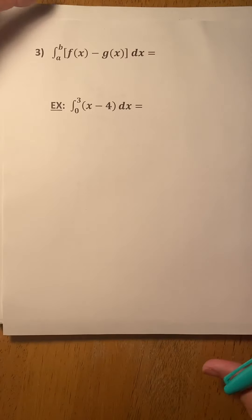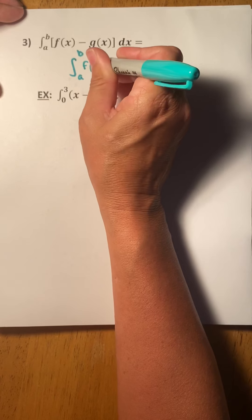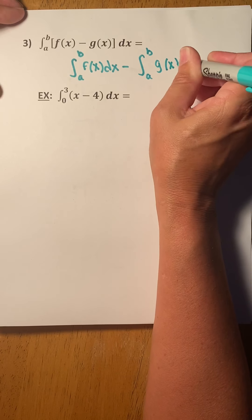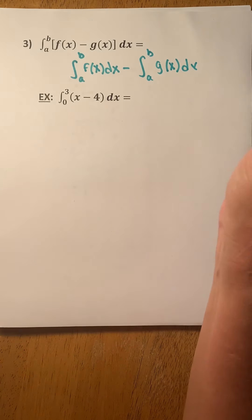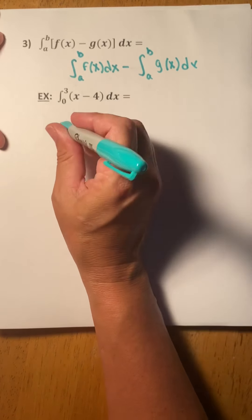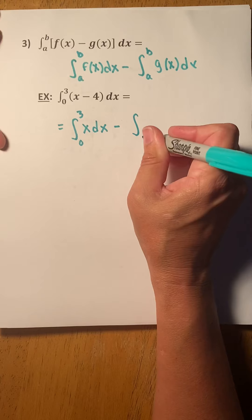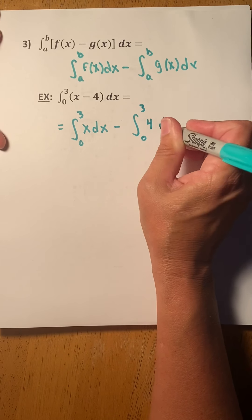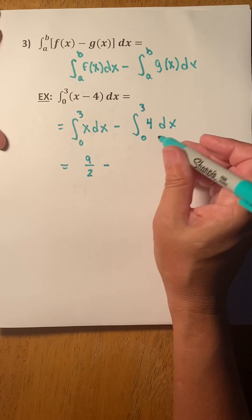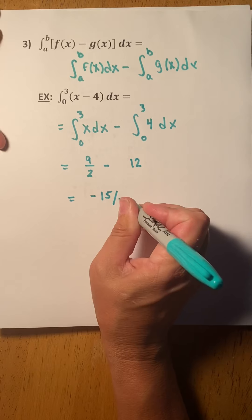We always want exact values unless otherwise stated. This is 16.5, but we prefer fractional values when they give exact answers. Likewise, you can distribute an integral through a difference. The integral from 0 to 3 of (x minus 4) dx equals the integral of x from 0 to 3 minus the integral of 4 from 0 to 3, which is 9 halves minus 12. That gives 9 halves minus 24 halves, which is negative 15 halves.